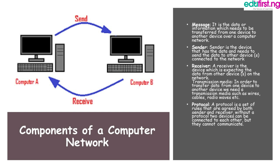Sender is the device that has the data and needs to send it — it could be your laptop or your phone. Receiver is the device expecting the data from another device on the network. Protocol is a set of rules agreed upon by both sender and receiver. Without a protocol, two devices cannot connect or communicate with each other.